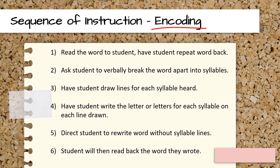Here is a list of brief instructions when teaching students to encode or spell multisyllabic words. The sequence is very similar to decoding. Start off by reading the word to the student and have them repeat the word back. Next, have the student verbally break apart the word into syllables. Then ask the student to draw a line for each syllable heard. Have the student write the letter or letters heard in each syllable onto the lines drawn. Next, have the student read each written syllable. After they've done that, have the student rewrite the word without the syllable lines and read the word back smoothly.